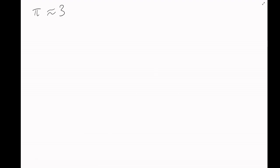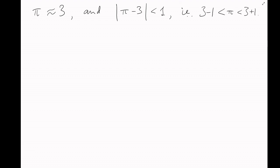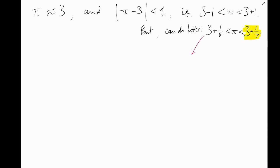So how could we work this out faster? Let's start with our first approximation: π is approximately 3, with x = 3 and y = 1. Notice that π − 3 is less than 1/y² = 1, so π is between 2 and 4. But we can do much better: π − 3, which is 0.14159..., is between 1/8 and 1/7, which means π is between 3 + 1/8 and 3 + 1/7. You might spot that 3 + 1/7 = 22/7.